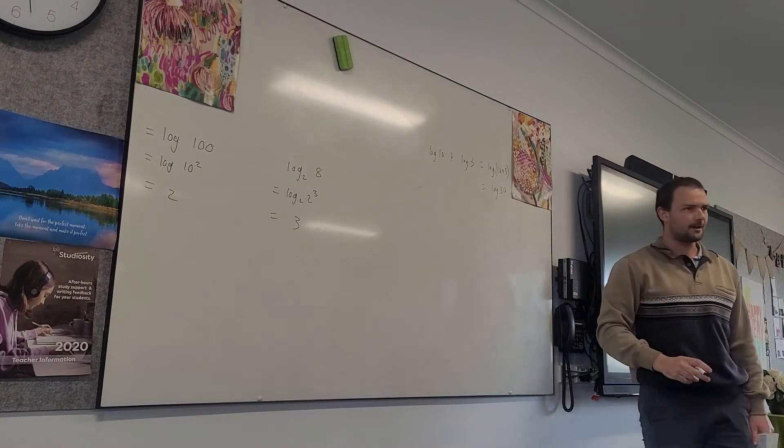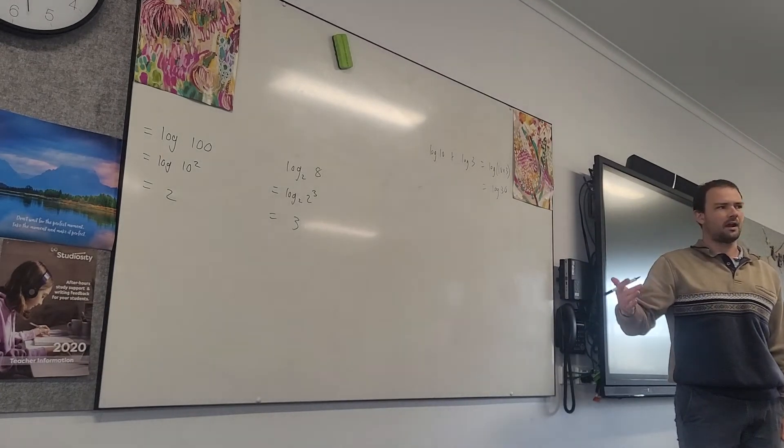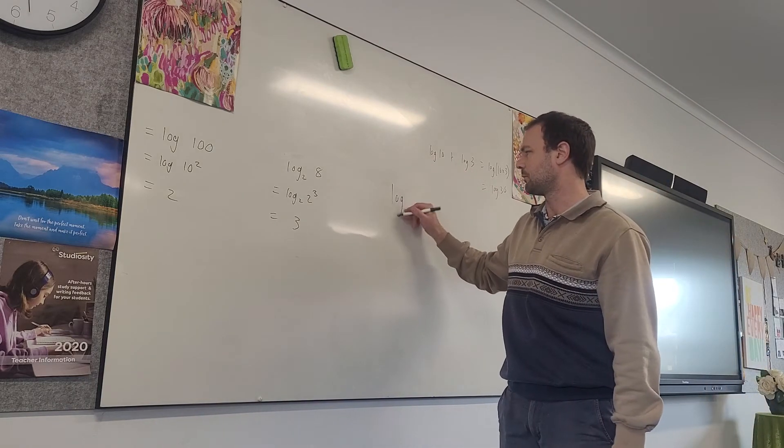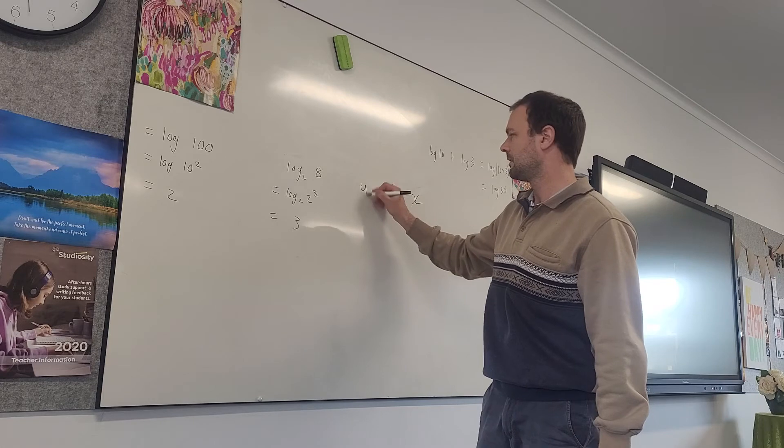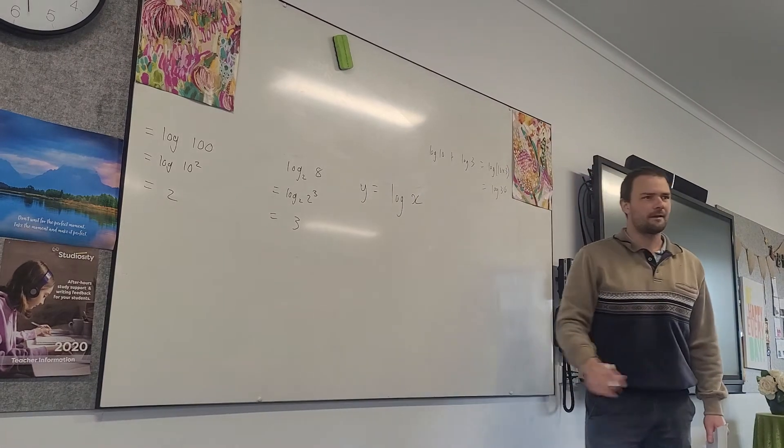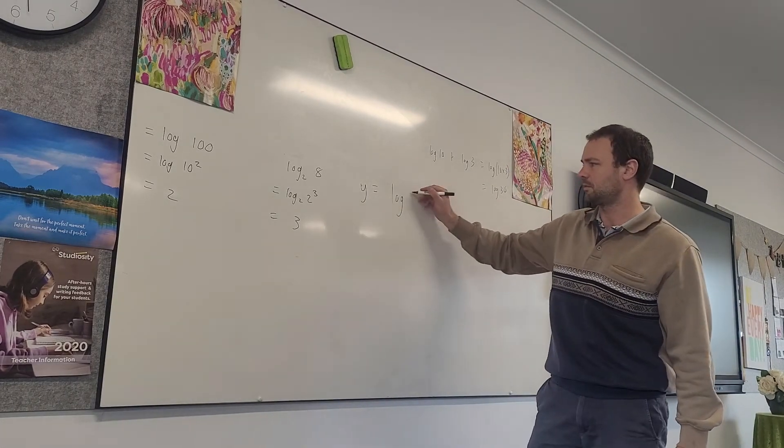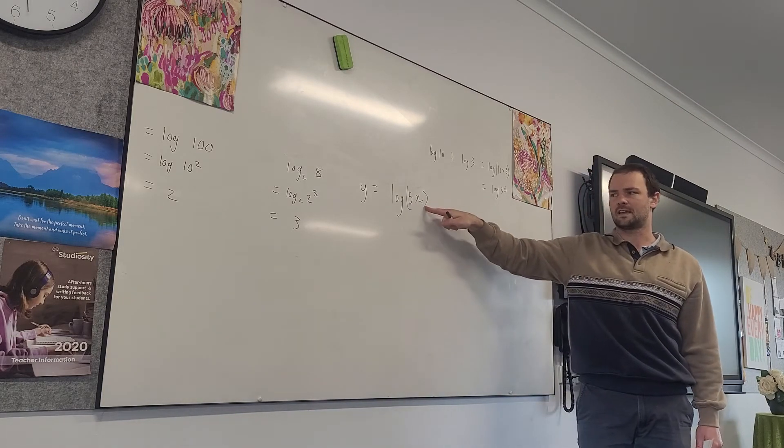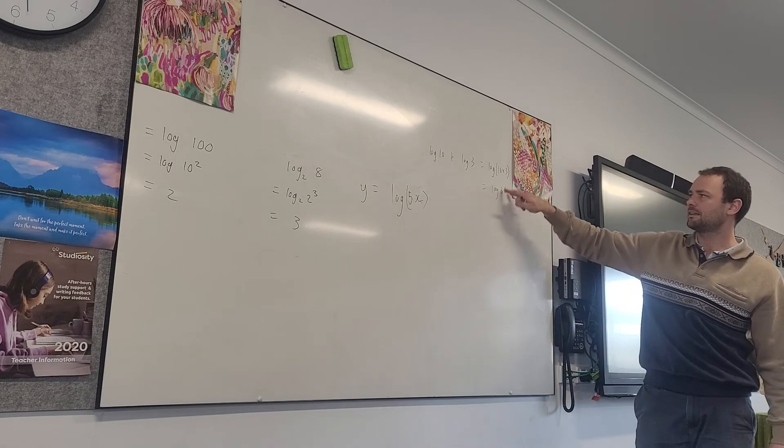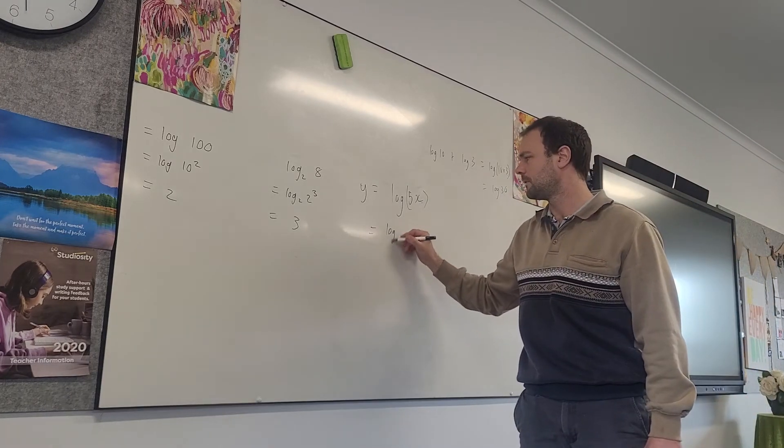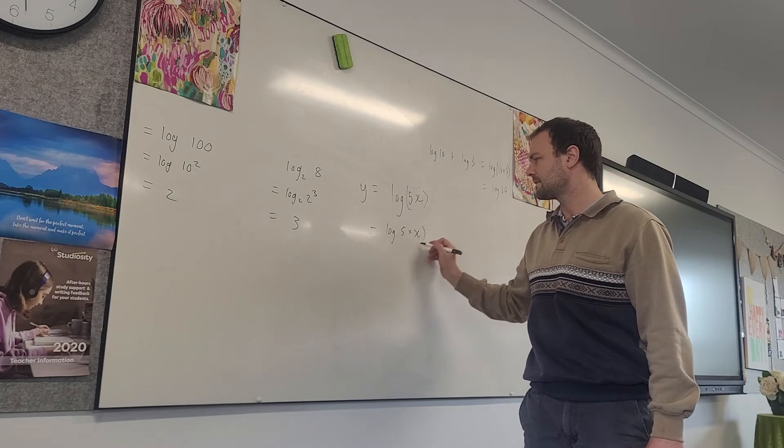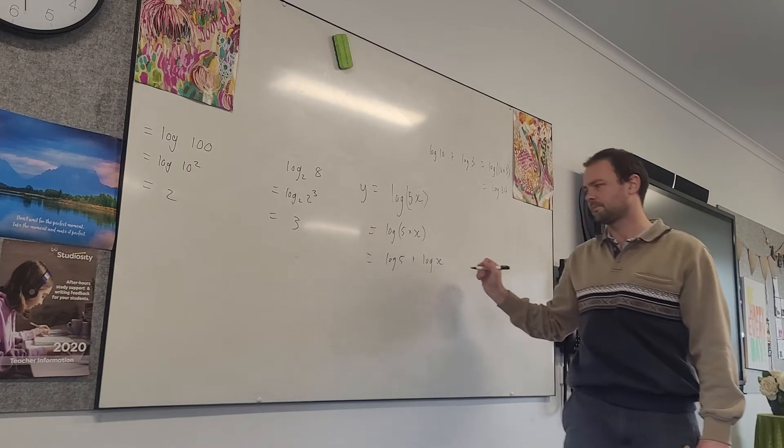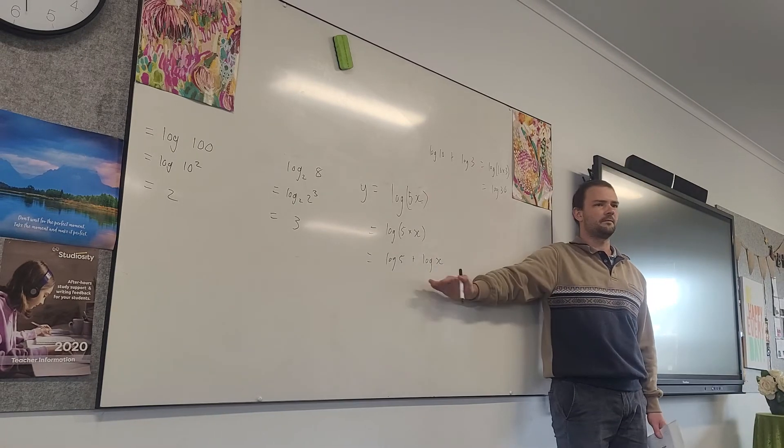But we can also go back the other way. In particular, so this is a bit of a forecast. Next year, we're going to be looking at graphs of logarithms. So we're going to have the graph of log x. And we can have the graph of log of 5x as well. Log of 5x. And we know log 5x is log of 5 times x. And so you can go back the other way. We can recognize it's log of 5 times x, which is log of 5 plus log of x. So we can go back the other way. A bit of foresight there.